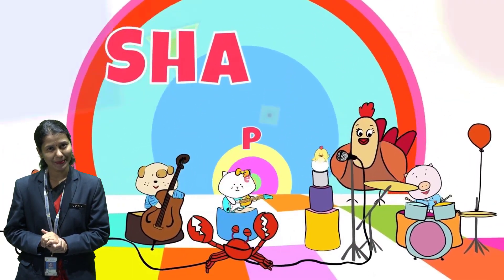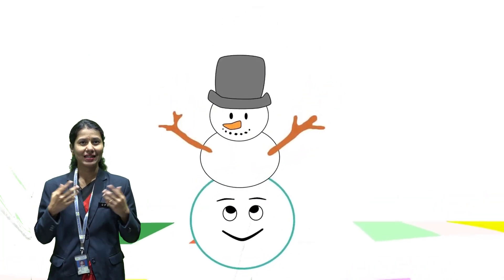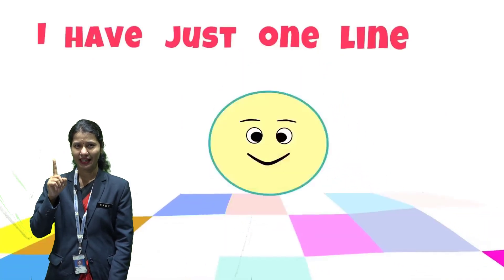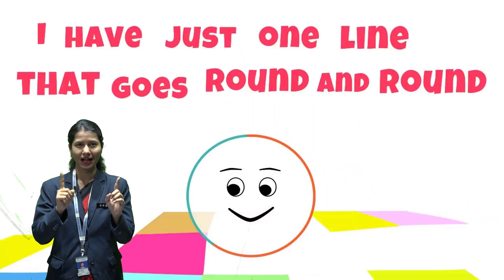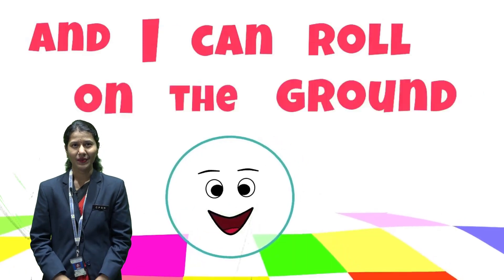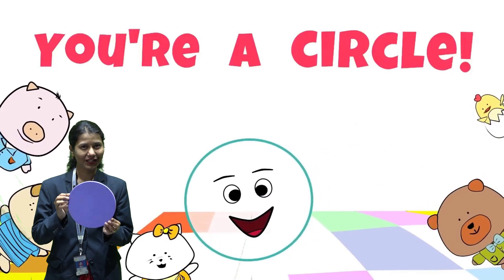Now, let's learn the poem. Do you know what I am? Say my name if you can. I have just one line that goes round and round and I can roll on the ground. What am I? You are a circle, you are a circle.